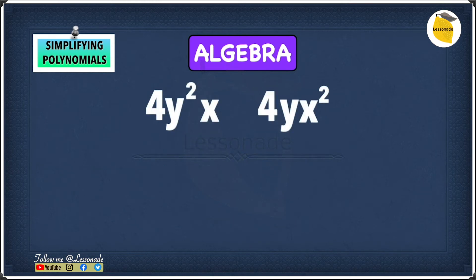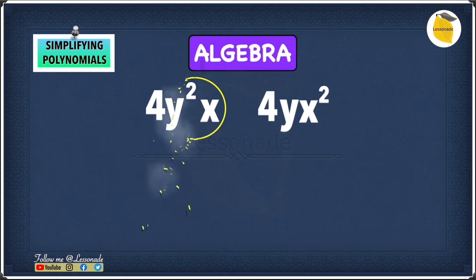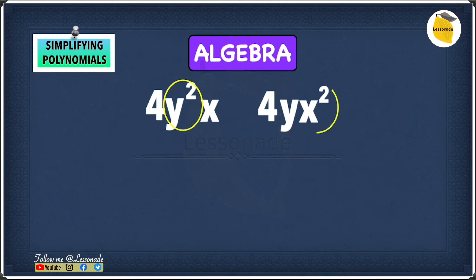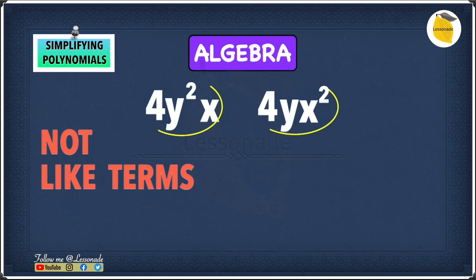Now let's look at a final example: 4y raised to the power of 2 times x, and 4y times x raised to the power of 2. Some of you may think these are like terms, but the variable parts are y²x and yx². These are not the same — in the first term, y is being raised to the power of 2, while in the second term, x is being raised to the power of 2. Therefore, these are not like terms, and we cannot combine them to make it simpler.